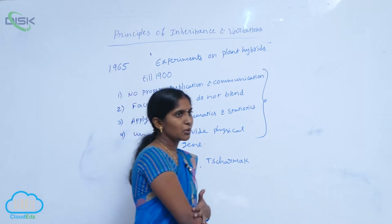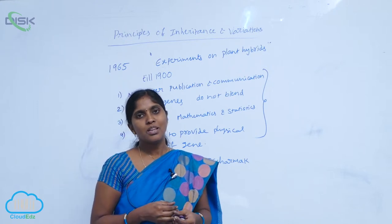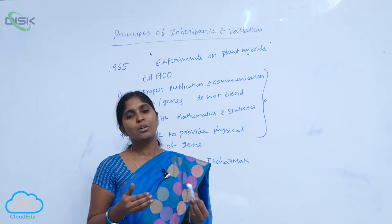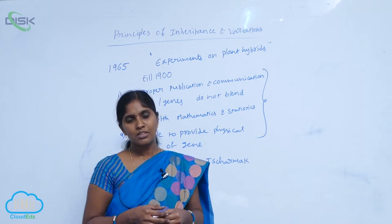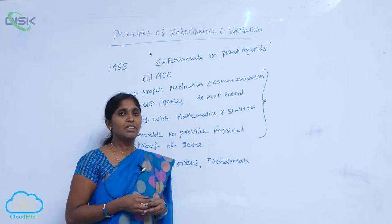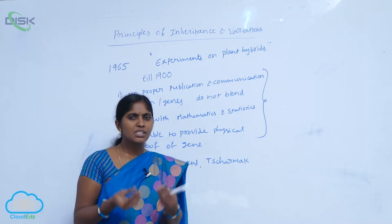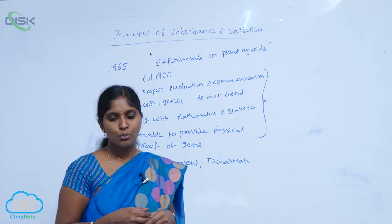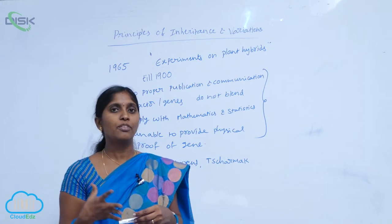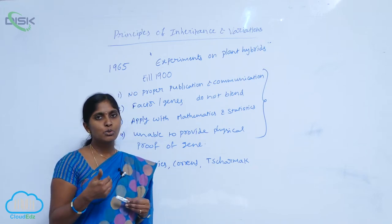After the discovery of chromosomes, Sutton and Boveri both worked on the chromosome. While working, they concluded that chromosome behavior is parallel to the behavior of the genes postulated by Mendel. They found a similarity between Mendel's genes and chromosomes present in the cell, and using Mendel's inheritance principles along with chromosomal behavior, they postulated the chromosomal theory of inheritance.